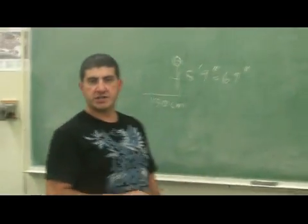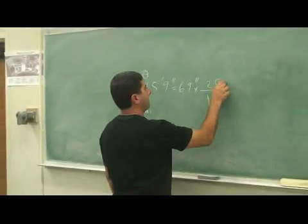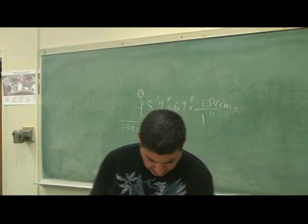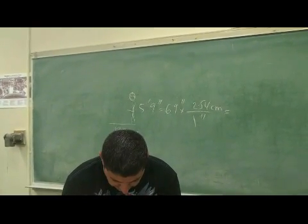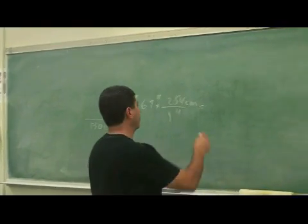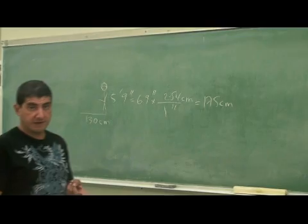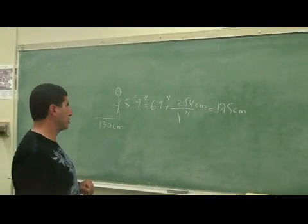And we know one inch is 2.54 centimeters. So when I multiply that, that's going to come out to be 69 times 2.54 or 175 centimeters. So I'm a 175 centimeter person casting a 130 centimeter shadow.